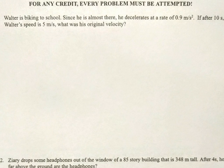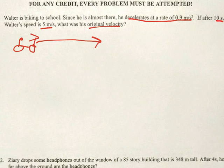So number one, always read the problem carefully. Walter is biking to school. Since he is almost there, he decelerates at a rate of 0.9 meters per second squared. After 10 seconds, Walter's speed is 5 meters per second. What was his original velocity?